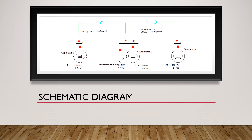This figure shows the schematic diagram of three generating units supplying power to a variable load. In this diagram, three generators are connected to three different buses — bus 1, 2, and 3 — all interconnected through transmission lines. All three generators supply power to meet a variable load which is connected at bus number 2.